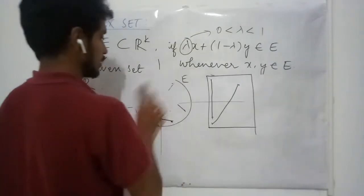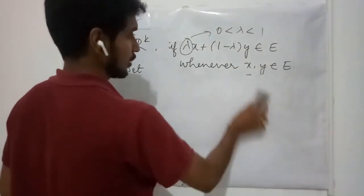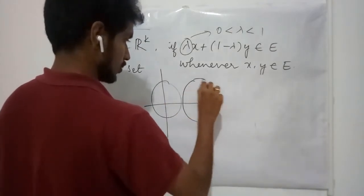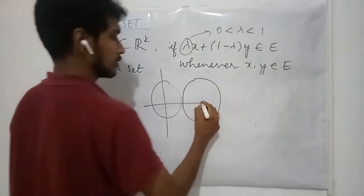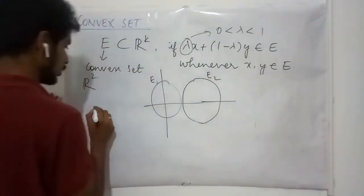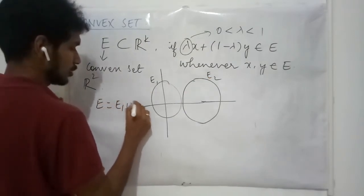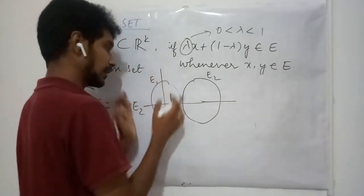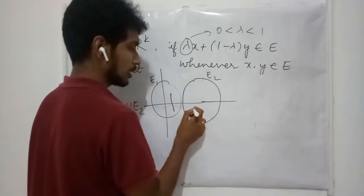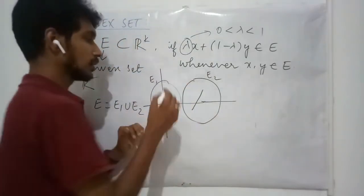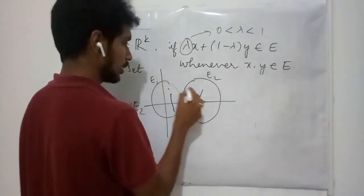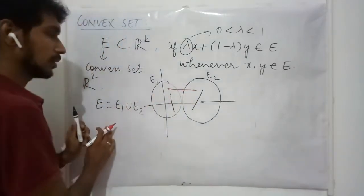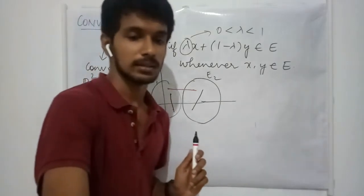If you consider a set that is the union of two regions — let this be E1 and let this be E2, and your E is the union of these two — if I take a point in E1 and a point in E2, the line joining these two points does not lie entirely inside E. Therefore, this E is not a convex set.